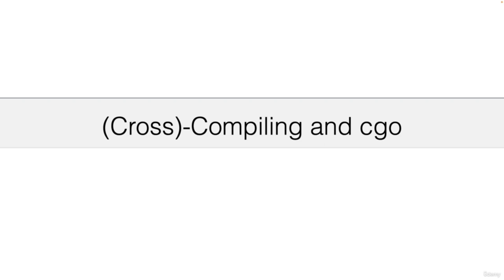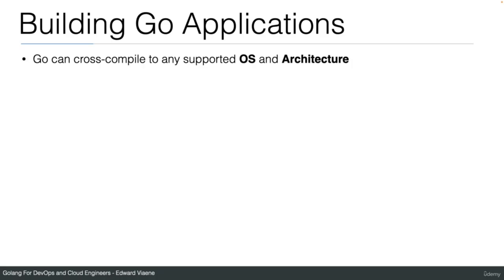In this lecture I'm going to talk about cross-compiling and CGO. Go can cross-compile to any supported operating system and architecture. Cross-compiling means that I can compile on my Linux system a Go binary for a Mac or a Windows system. Architecture means I can do that for AMD64, which is the Intel architecture, or I can also do that for ARM64.